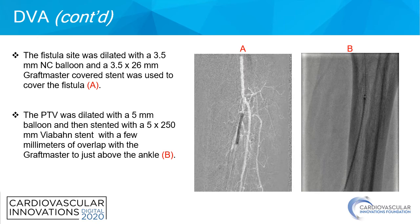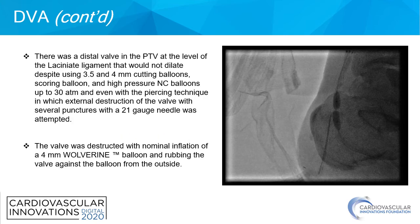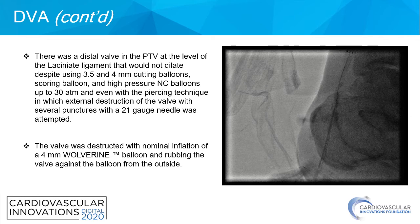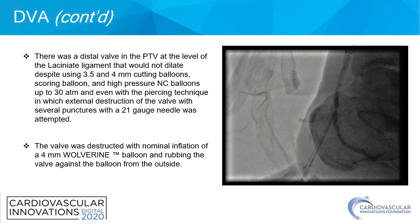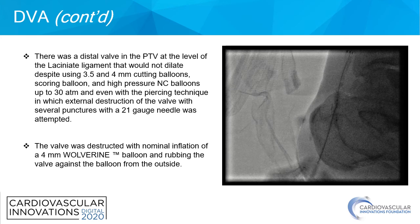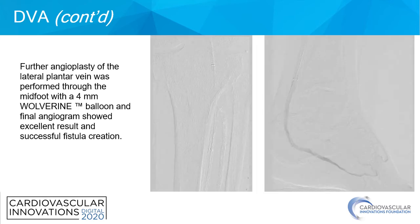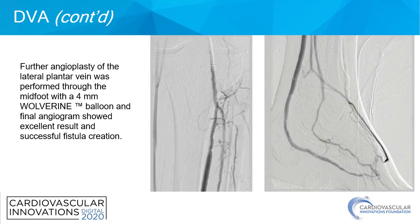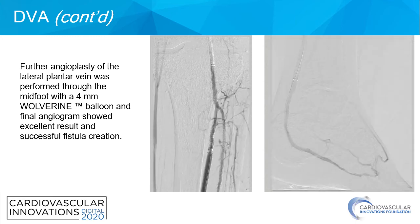The posterior tibial vein was dilated with a 5 mm balloon and then stented with a 5 x 250 mm wire-bound stent with a few millimeters of overlap with the covered stent just above the ankle. There was a distal valve in the posterior tibial vein at the level of the laciniate ligament that would not dilate despite using 3.5 and 4 mm scoring balloons and high pressure NC balloons up to 30 atmospheres, and even with a piercing technique using external disruption with a 21-gauge needle. This valve was ultimately disrupted with nominal inflation of a 4 mm balloon and rubbing the valve against the balloon from the outside. Further angioplasty of the lateral plantar vein was performed through the midfoot, and the final angiogram showed excellent results with successful fistula creation.